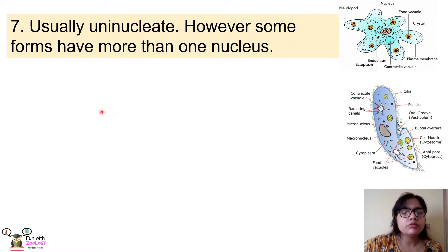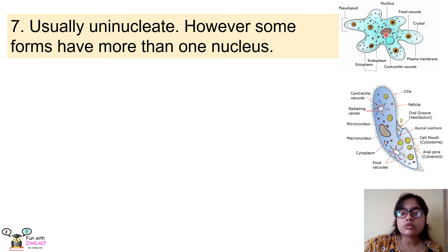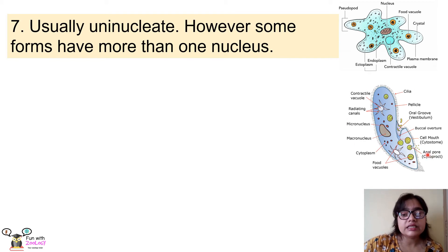The next point is about the nucleus. Almost every animal cell possesses a nucleus, which contains genetic material. Different protozoans have different numbers of nuclei. For example, Amoeba — as shown in the upper picture — has only one nucleus, so Amoeba is uninucleate. The lower picture shows Paramecium, which has two nuclei.